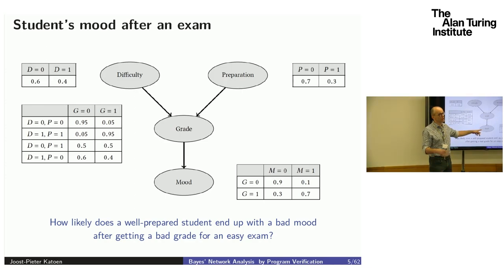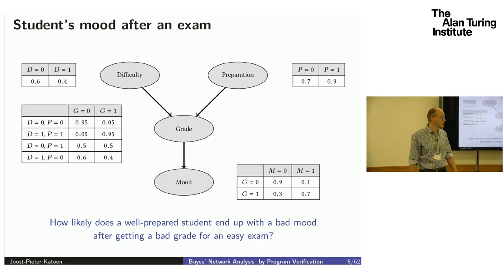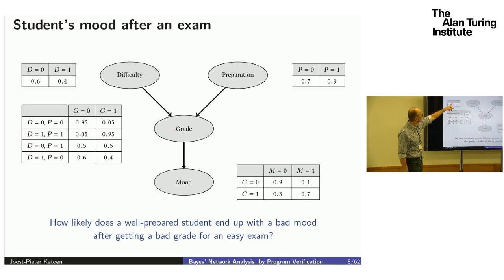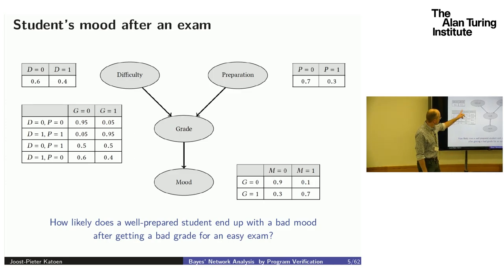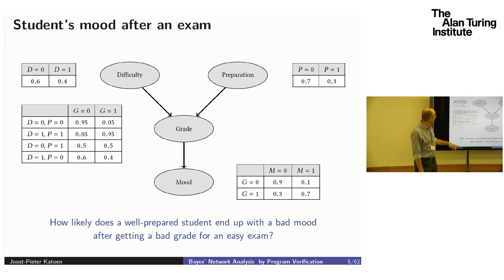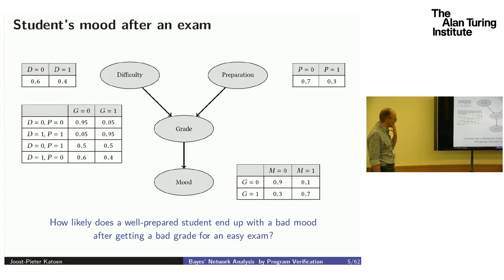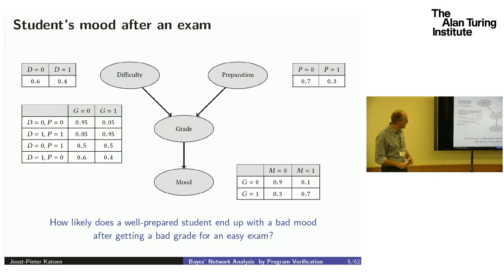The mood of the student depends on the grade. Here you see probabilities: difficulty is low with 0.6 and high with 0.4. Preparation levels are also probabilistic. Conditional probability tables tell you, for example, if difficulty is low and preparation is low, then the grade will be low with probability 0.95. A typical Bayesian inference question is: how likely does a well-prepared student end up with a bad mood after getting a bad grade for an easy exam?